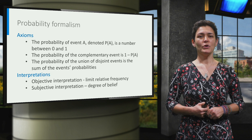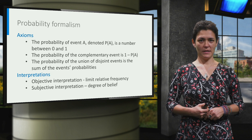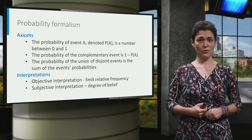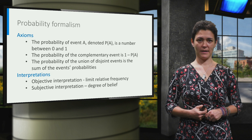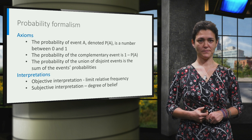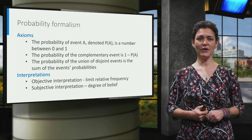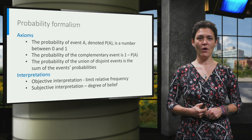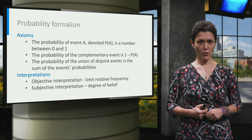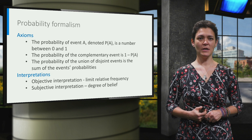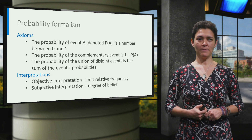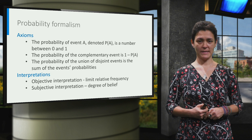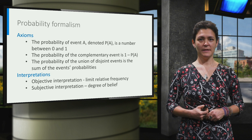Hence, we choose the probability formalism as the perfect tool for representing uncertainty. There are three probability axioms, also called Kolmogorov axioms, which formulate mathematical properties of the probability of events to occur.